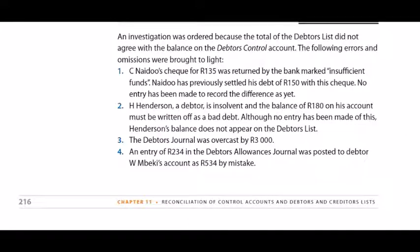Adjustment 3: The debtors journal was overcast by 3,000 Rand. If it's a totaling error in a journal, it doesn't affect the list because we never take journal totals to a list. Remember, every transaction is taken to the debtors ledger and ends up in the list as they take place, but journal totals are taken to the control account at the end of the month. So we just have to fix this in the control account by subtracting 3,000 Rand from the sales value from the debtors journal.